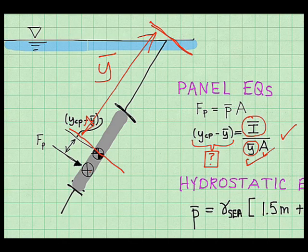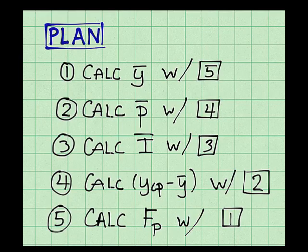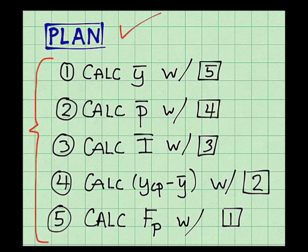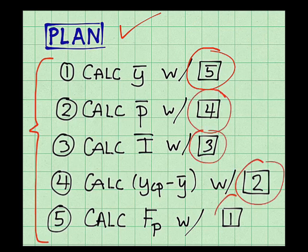Here's my plan. Notice there's five steps. And in my documentation, this is my paper copy. I went ahead and numbered each equation, because there's a lot of details here. So I'm going to calculate the slant height with equation five. Calculate the pressure at the centroid with equation four. You get the idea. Let's go ahead and do calculations.